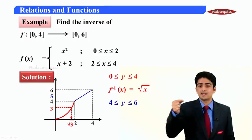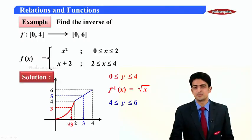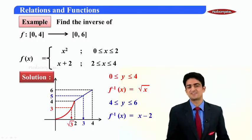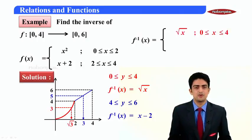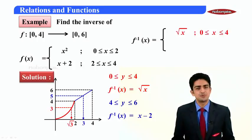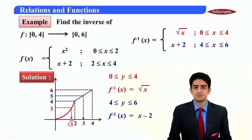So by coming back it should be minus 2, so x-2. Combining it we get our answer: from 0 to 4, f⁻¹(x) is √x and from 4 to 6, f⁻¹(x) is x-2.